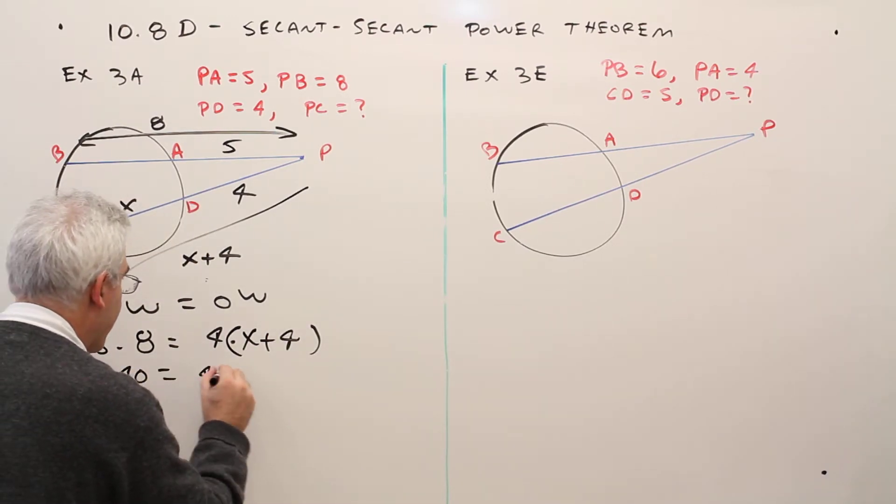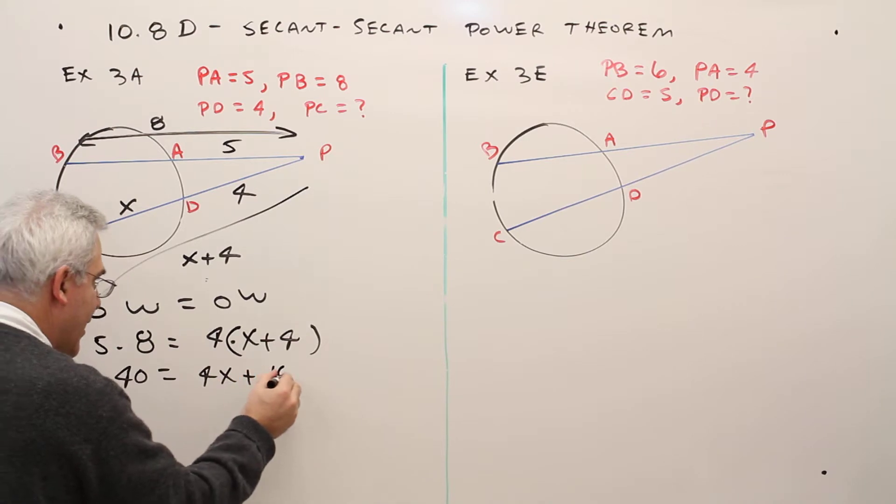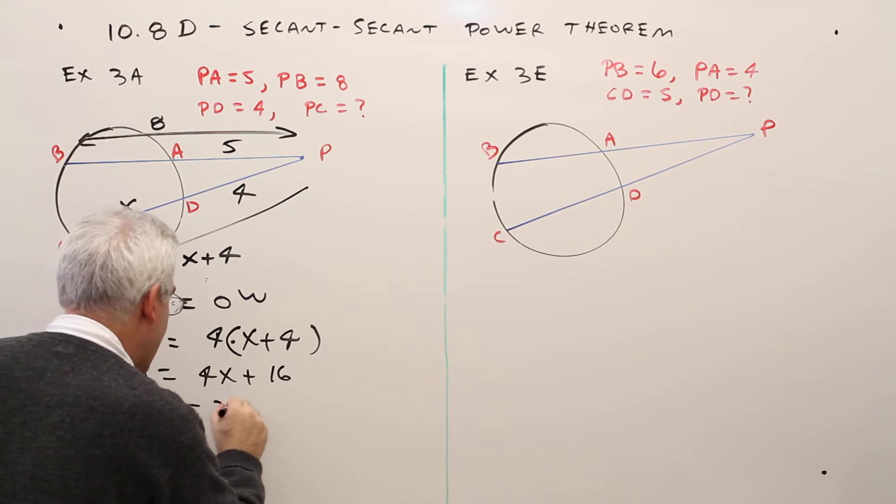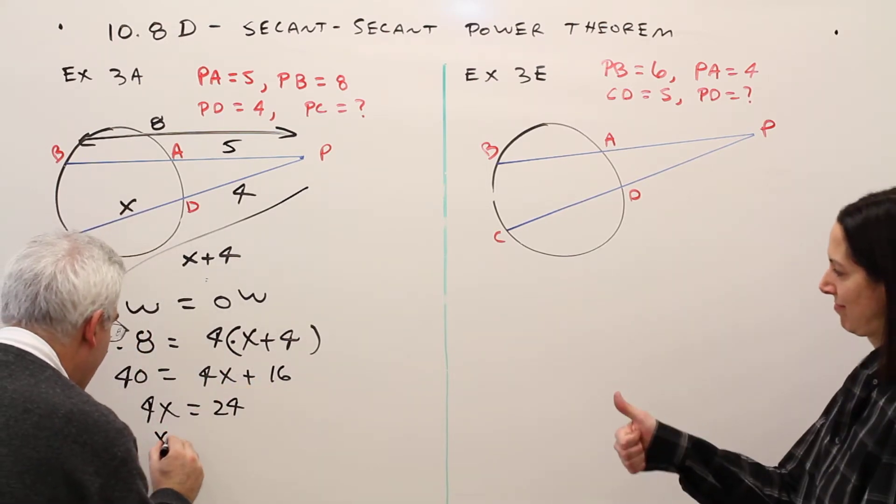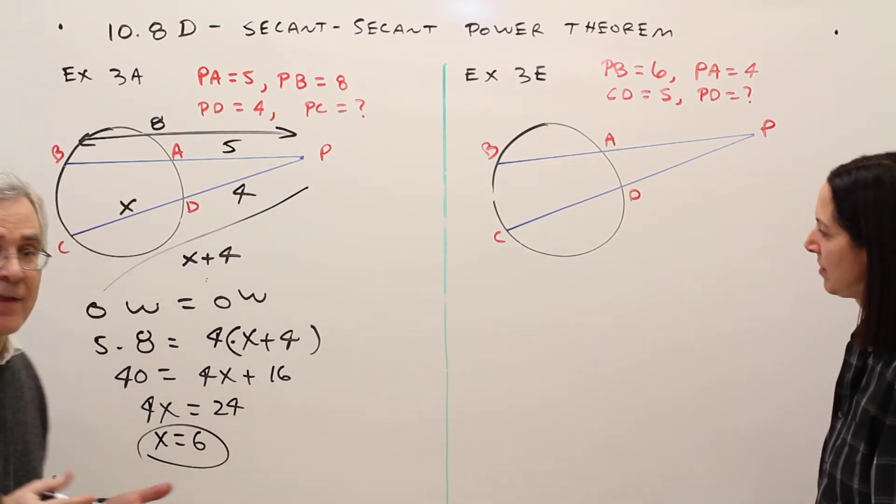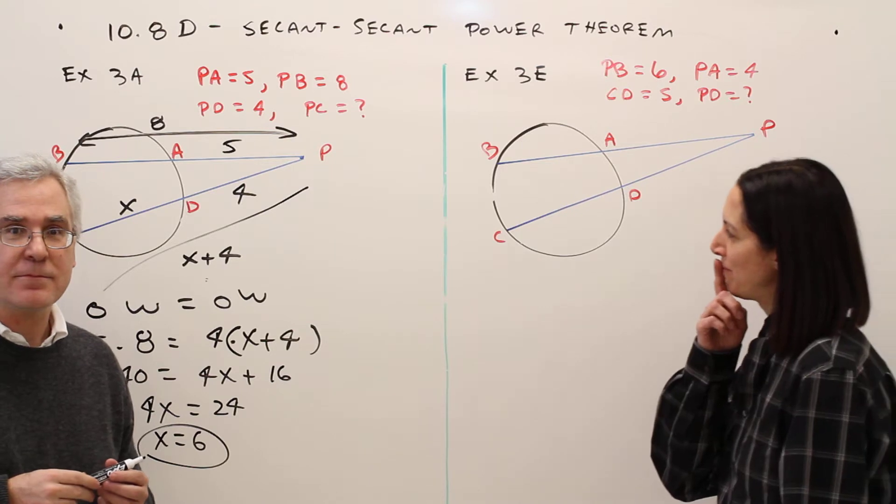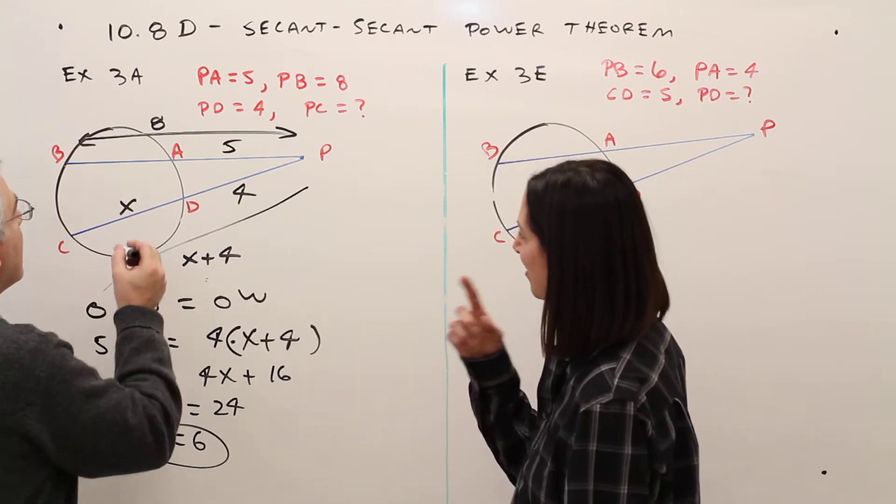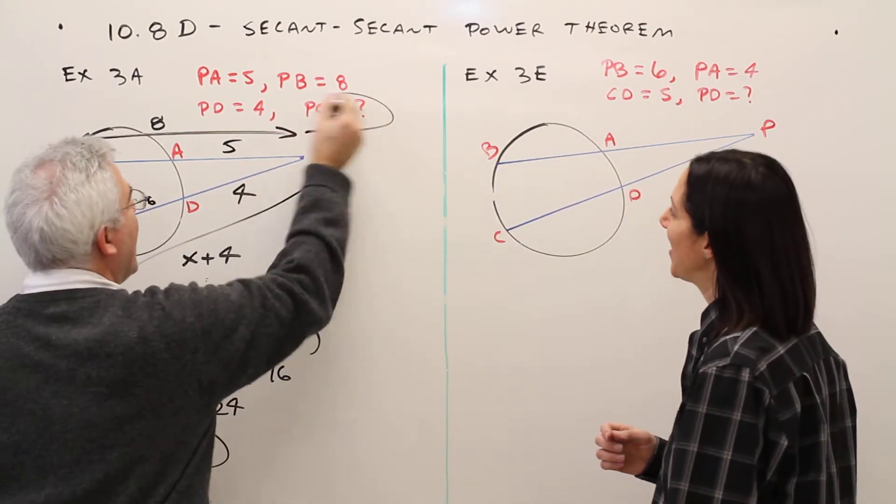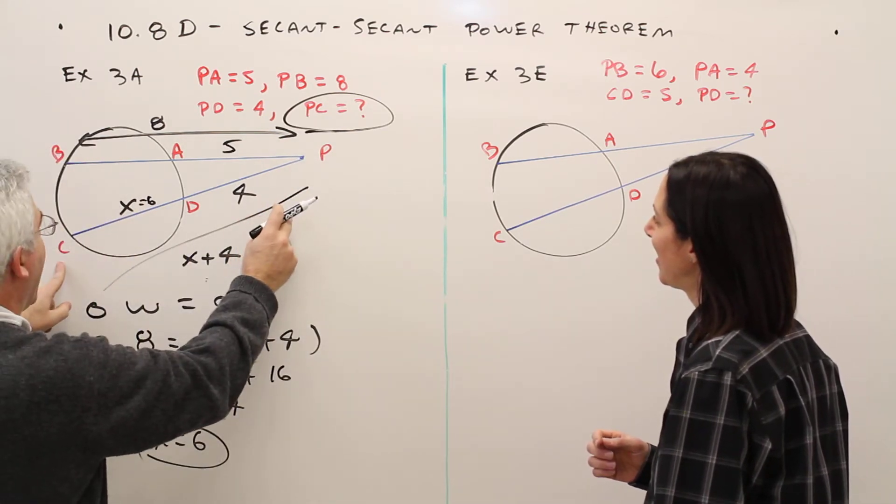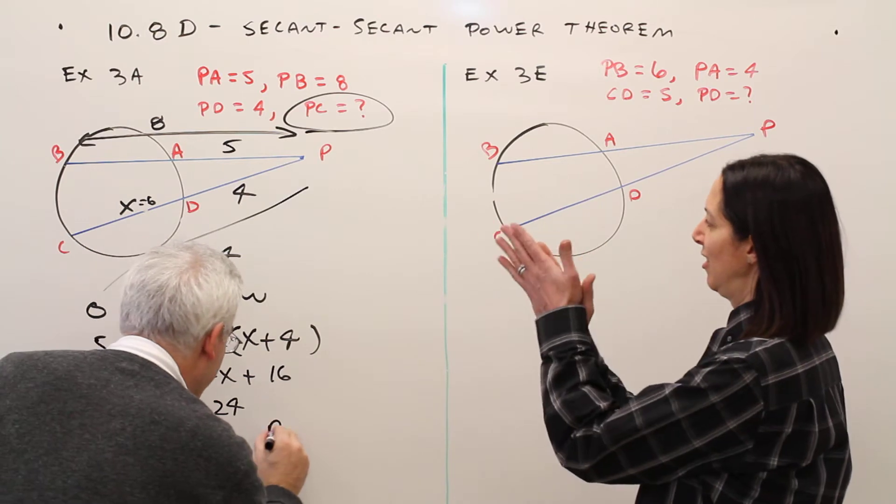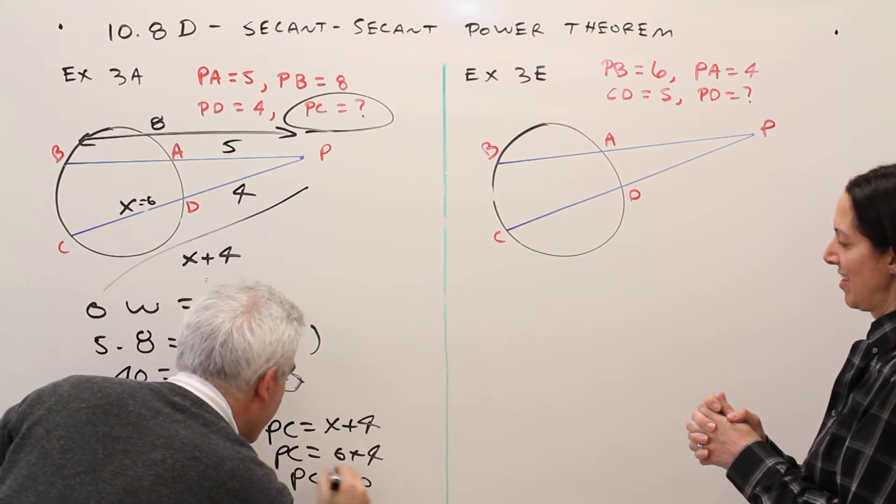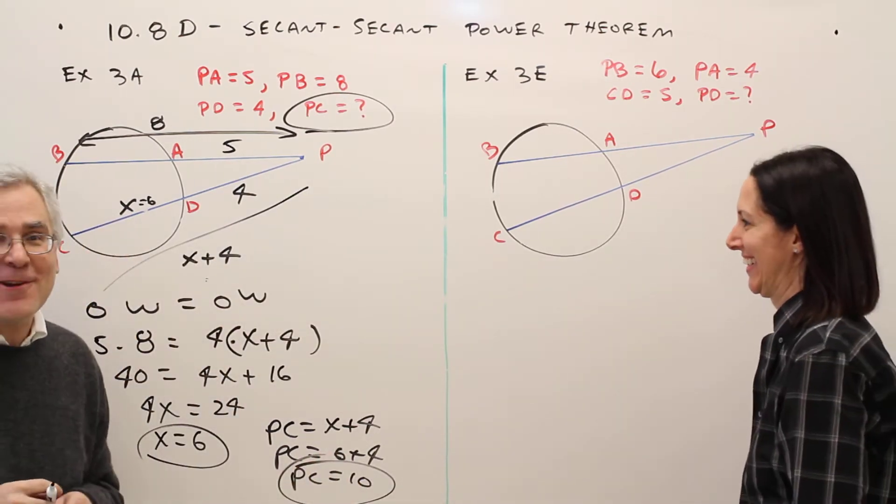4 times X plus 4. Alright, so 40 equals 4X plus 16. Bringing the 4X over here. Doing some mental math. Is that maybe 24 if I've done my math correct? So X equals 6. Are you sure you answered the question though? Oh, you're right. Two mistakes. So PC is what they want. PC would actually be X plus 4. PC equals 6 plus 4. PC equals 10. Thank goodness you were here.